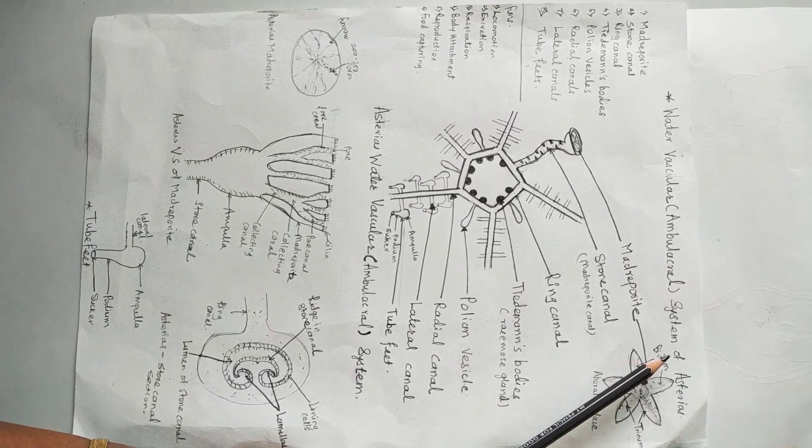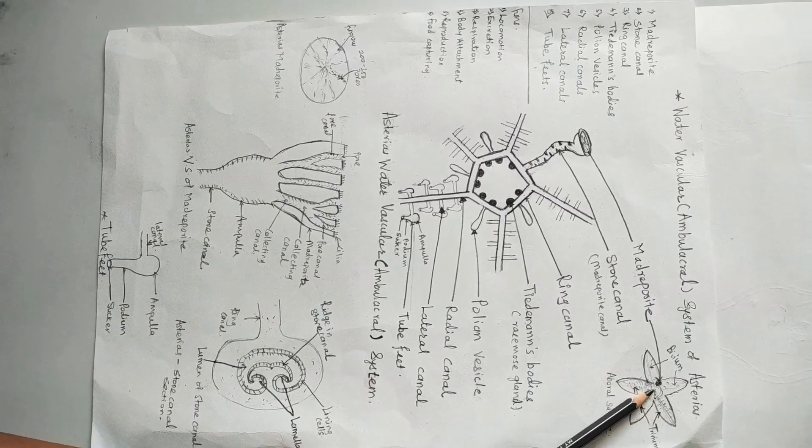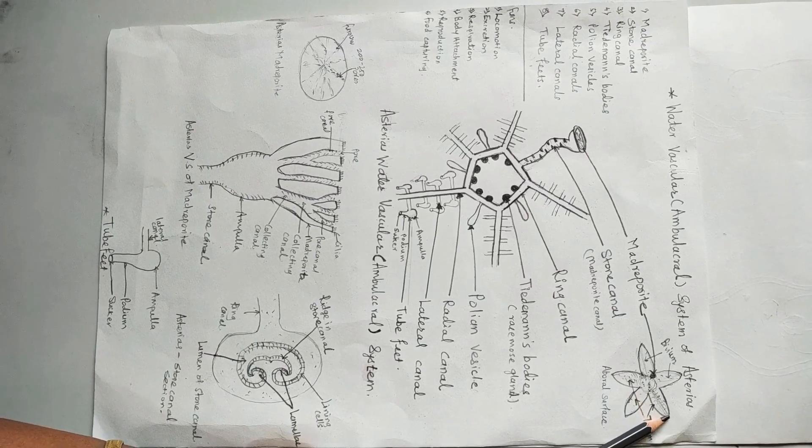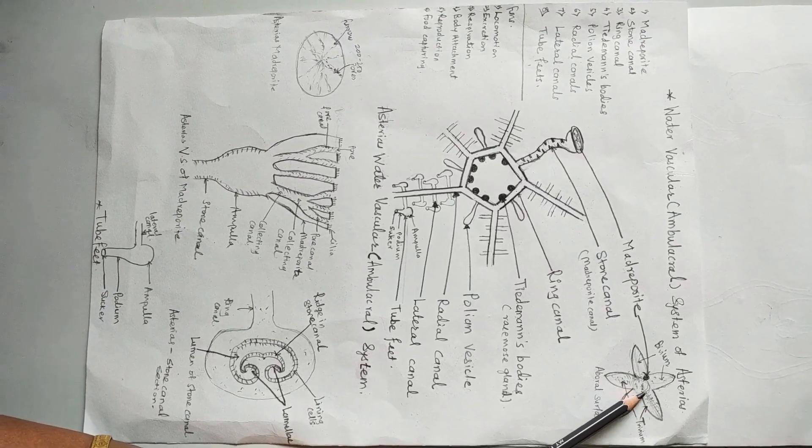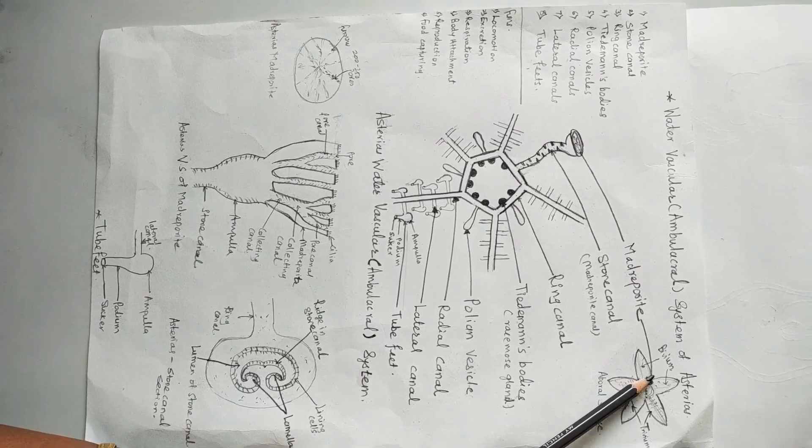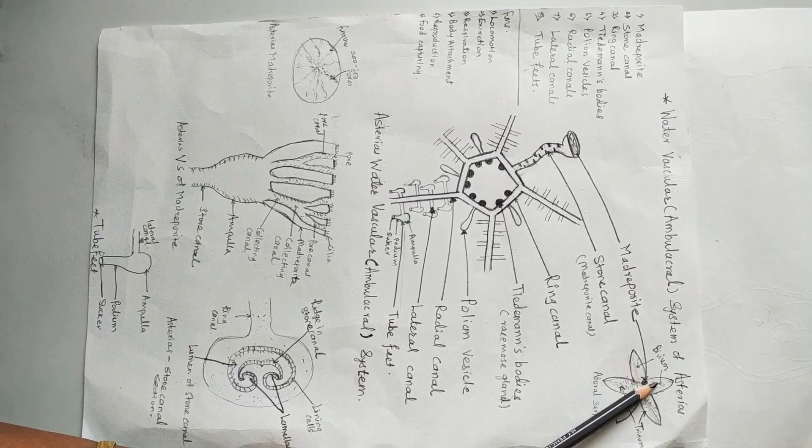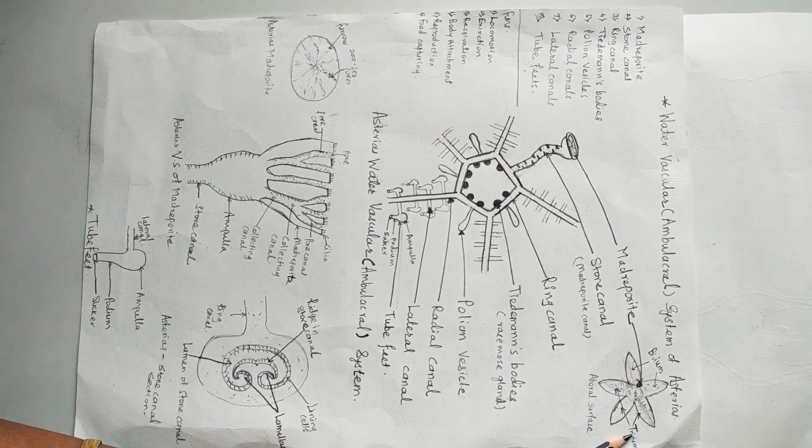Those two arms are termed as bivium. The portion of the arm is called radii and the portion between the bases of two arms is called interradii. The madreporite is situated at the interradial position and those two arms are called bivium, and the remaining three arms are called trivium.